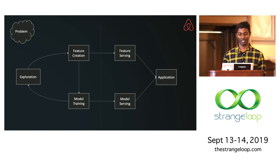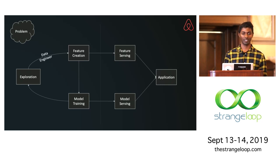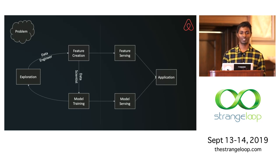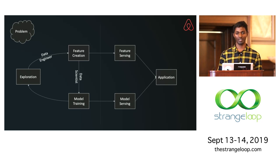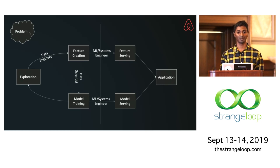I've been using 'data scientist' as a singular term, but usually this involves teams of people with different skill sets. The first set is data engineering — creating the pipelines necessary to generate features. Then the data scientist, the fancy ML PhD who trains the model with the newest algorithm. And the next set of people who take this to production are called machine learning engineers, but in reality they are systems engineers.